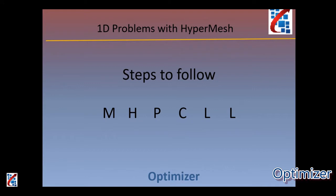Hello everyone, welcome back to my channel Optimizer. We are right now in the series of 1D mesh in HyperMesh. In this video we are going to start with how to use a rod element. In the last video we discussed the different types of 1D elements — rod, bar, beam, and others. In this video we are going to use a rod element to solve one beam problem.